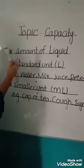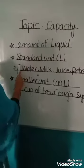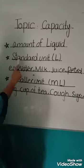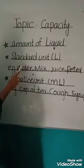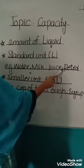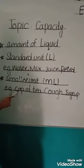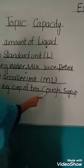What is capacity? Capacity is defined as an amount of liquid which can hold. Standard unit of capacity is liter, and examples of standard unit are water, milk, juice, and petrol. The smaller unit is milliliter, for example cup of tea and cup of syrup.